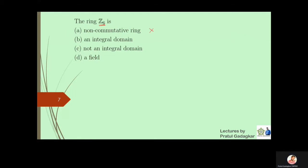Now we're asking about the Z6 ring. Is it non-commutative? No, it is commutative. Is it an integral domain? Here, 2̄ times 3̄ equals zero bar, meaning Z6 contains zero divisors, and therefore Z6 is not an integral domain. It is also not a field, because a field automatically implies an integral domain. So both the integral domain and field options are wrong for Z6.